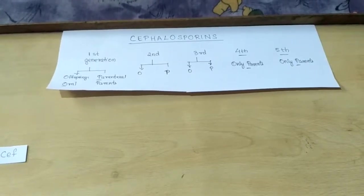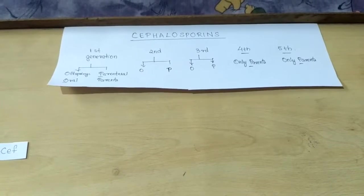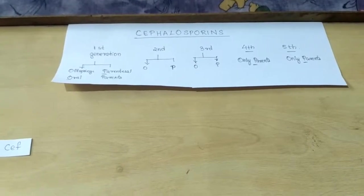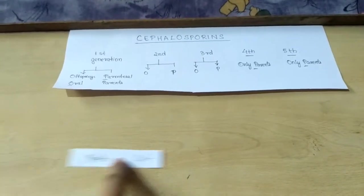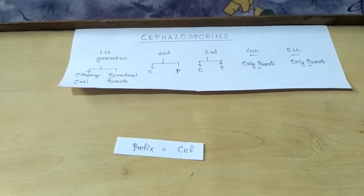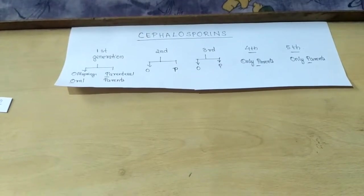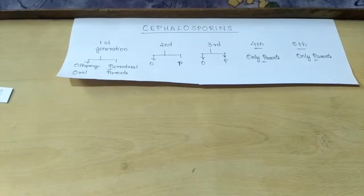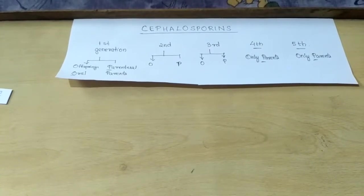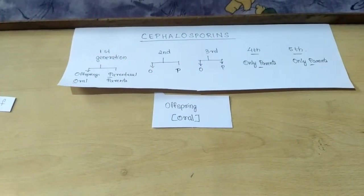Hello friends, in this video we are going to see the drugs under the third generation of cephalosporins, that is the oral and the parenteral drugs. As we already know, the prefix will be Ceph. What makes the third generation unique is that there is only one offspring in this generation, the oral drug.